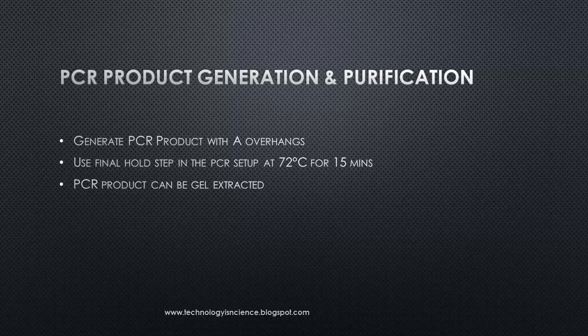Once the PCR product is generated, it can be used directly if there are no primer dimers. If you optimize the PCR conditions and it produces a single band on the gel, you can directly proceed with TA cloning. If there are multiple bands, a sub-optimal result, or primer dimers, the PCR product needs to be purified. PCR purification removes other PCR components from the mixture, and the product can be purified using gel extraction or PCR purification columns.